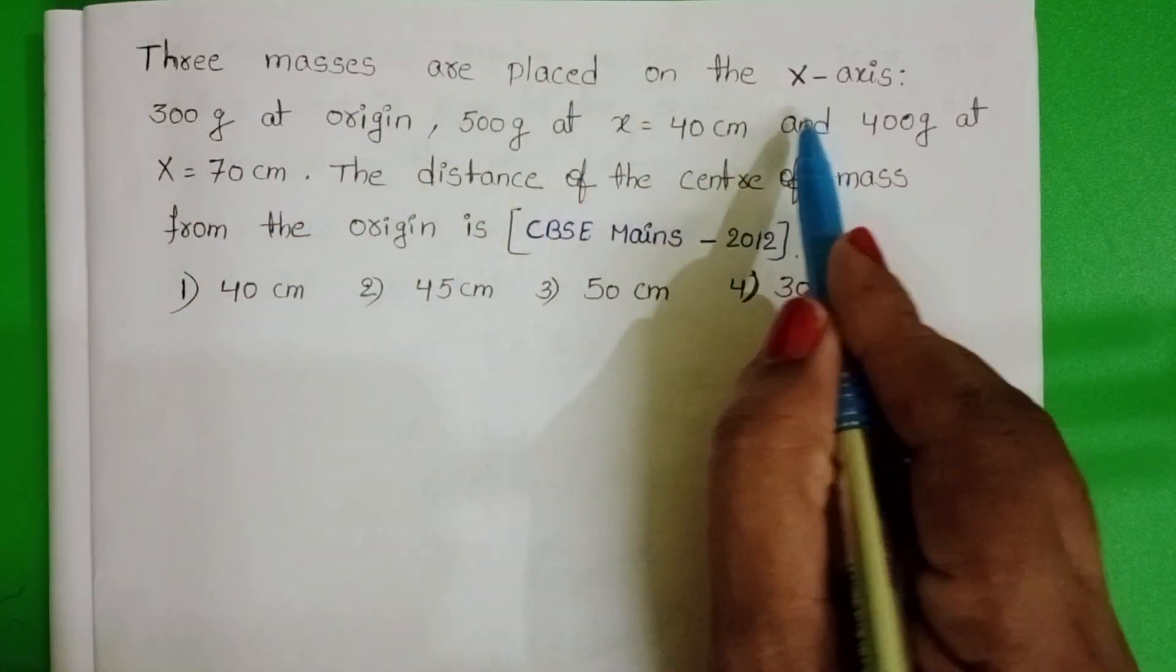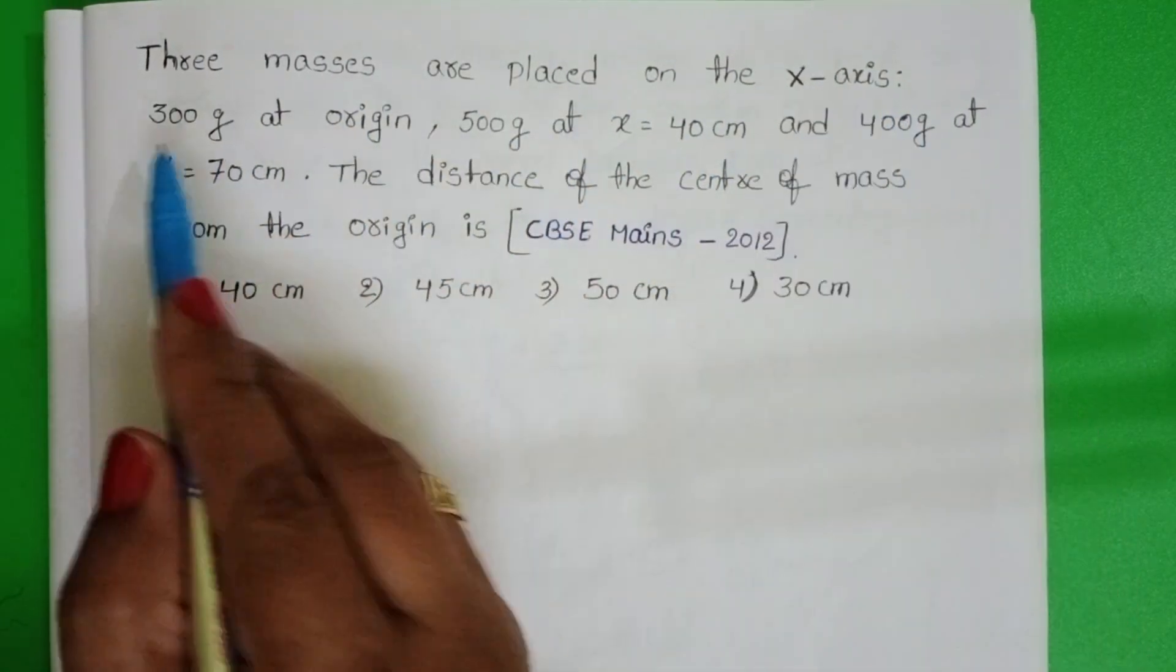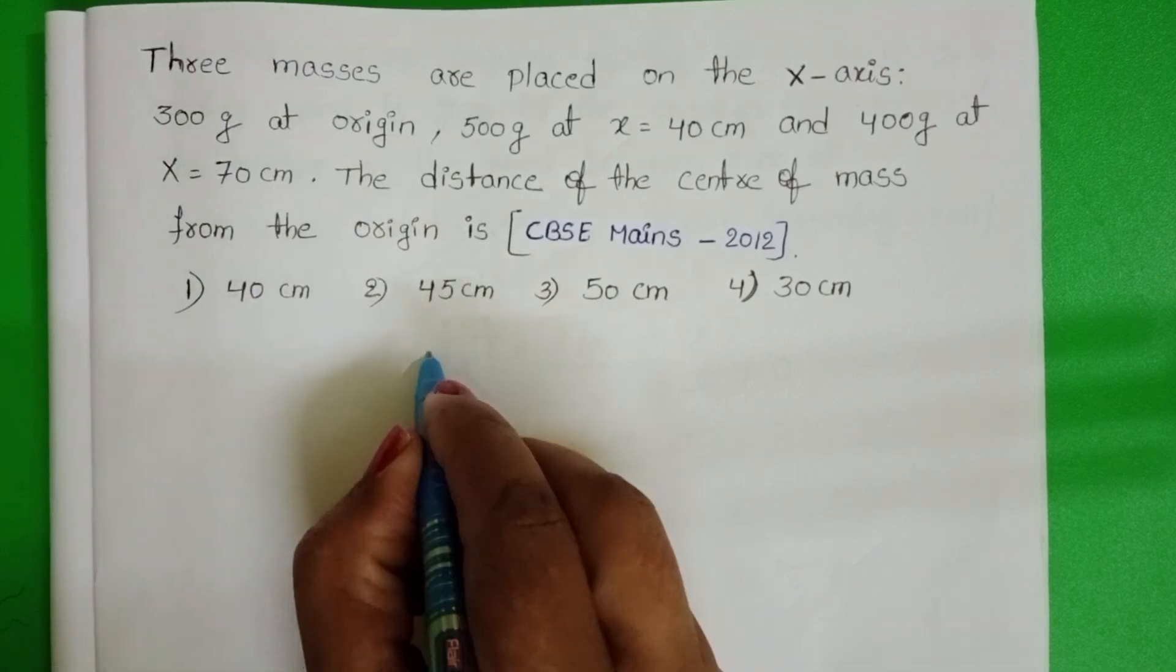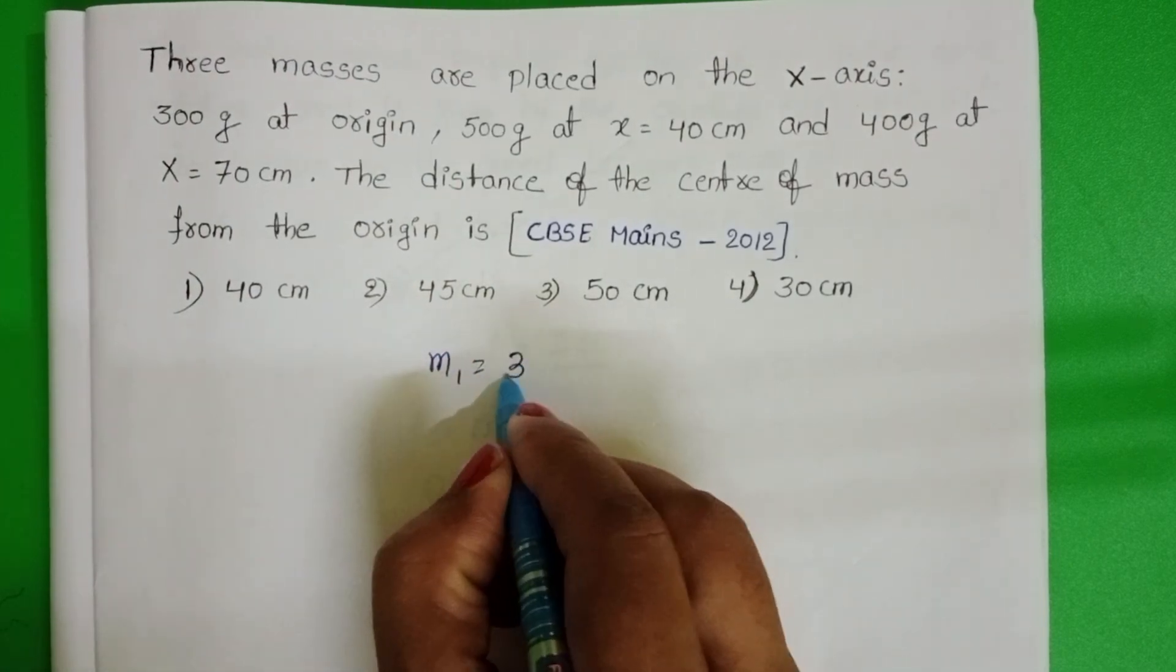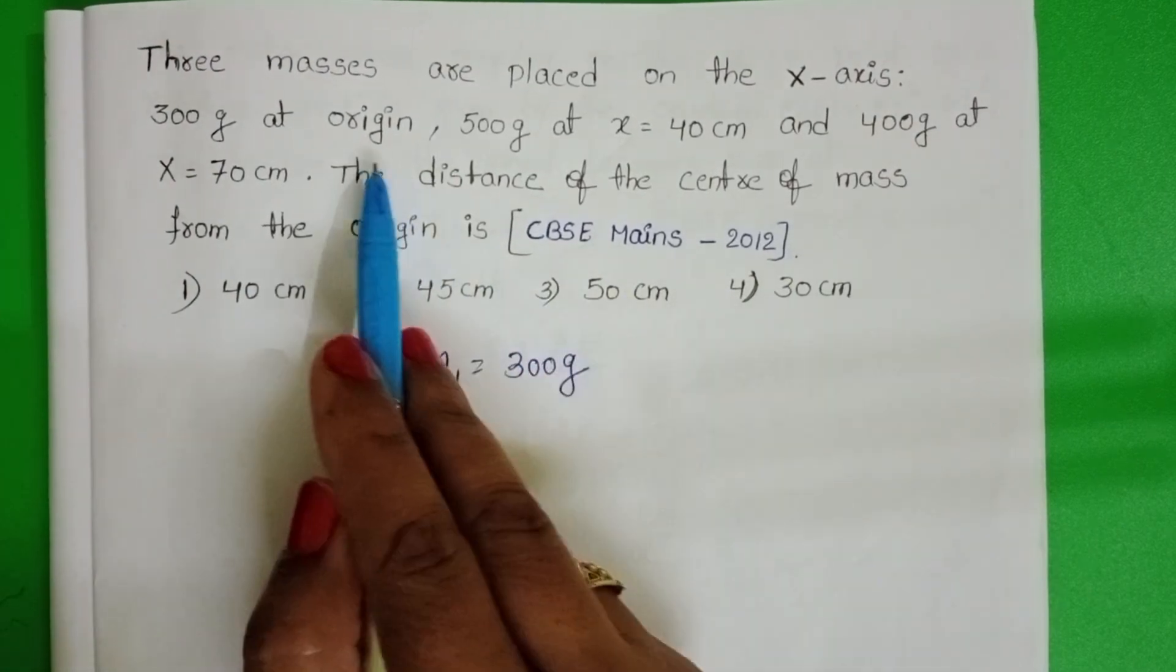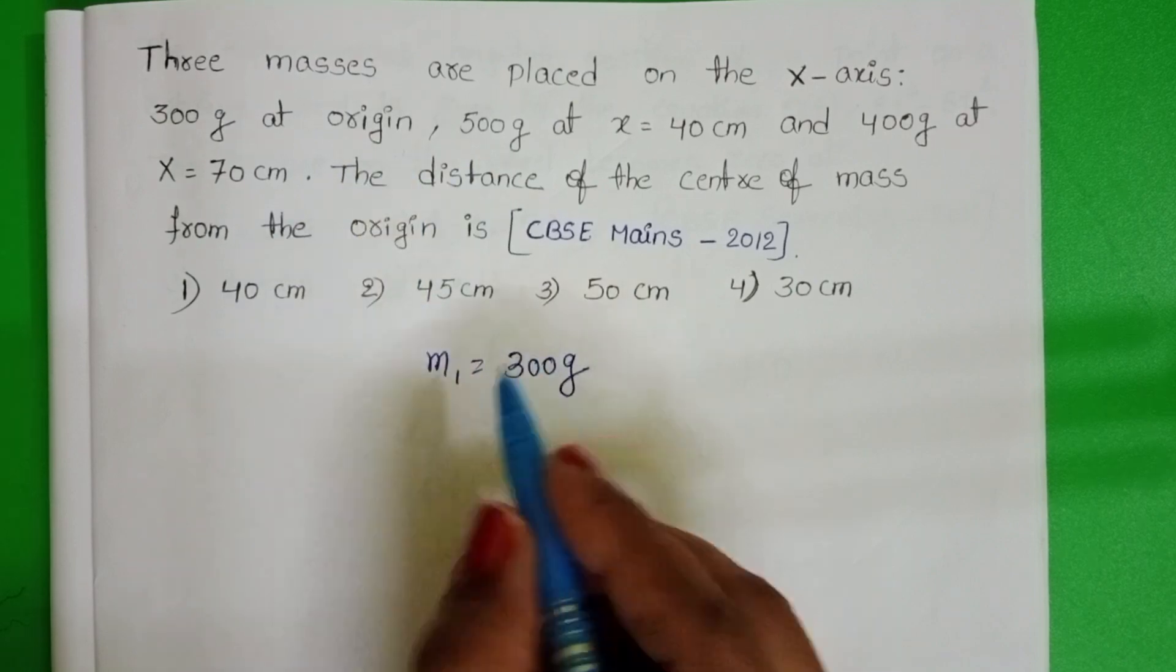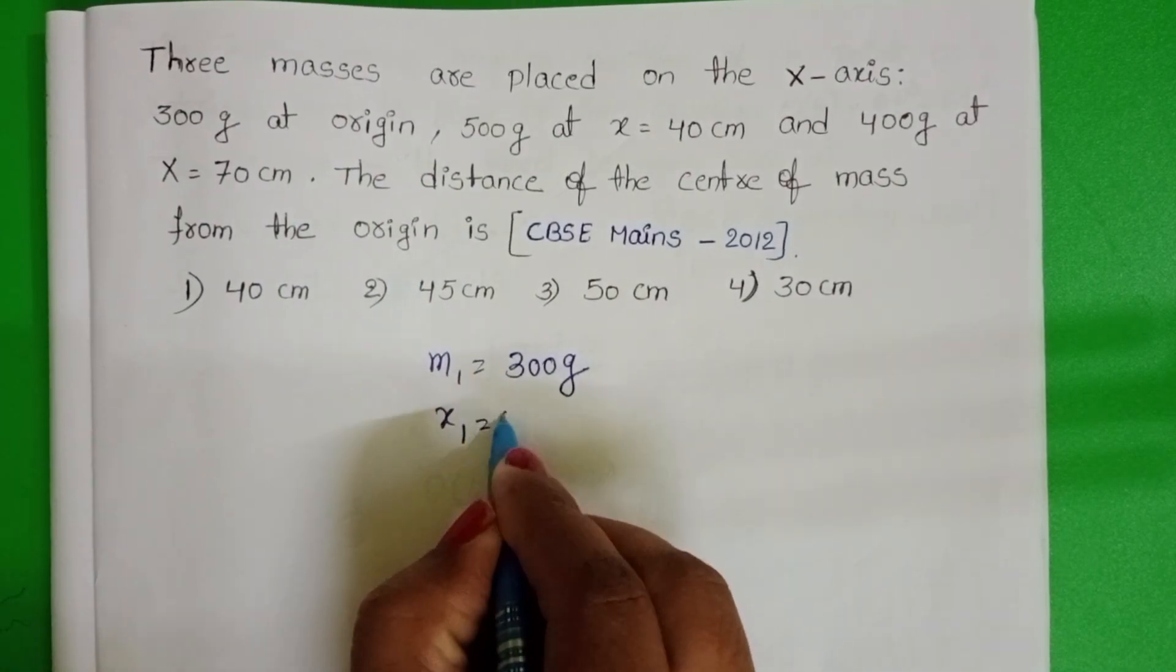Three masses are placed on the x-axis. The first mass is 300 grams, M1 equals 300 grams. It is placed at the origin, so x1 equals 0.